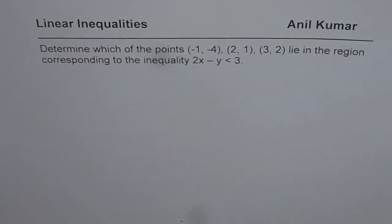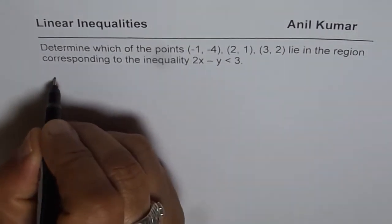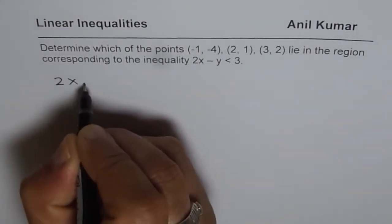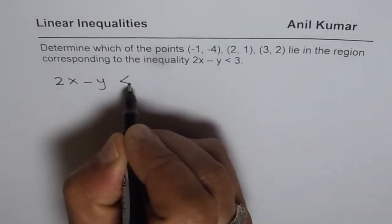Let's try to understand and solve this particular question. We will first solve the inequality. We are given inequality 2x - y is less than 3.